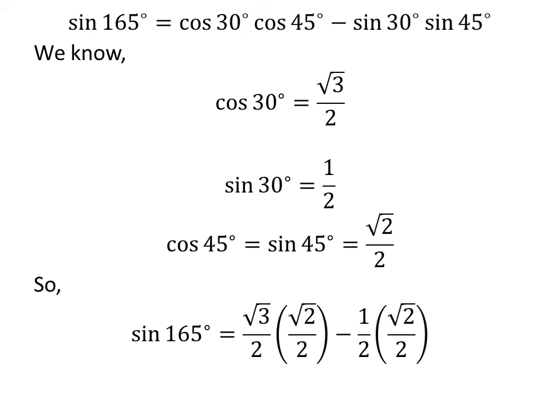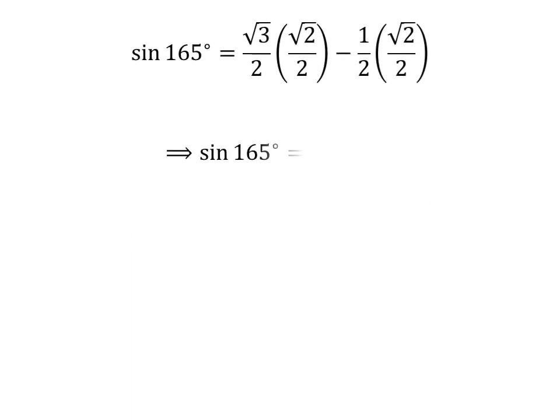Applying the values, we get square root of 3 upon 2 times square root of 2 upon 2 minus one half times square root of 2 upon 2. This multiplication gives us sine of 165 degrees is equal to square root of 6 upon 4 minus square root of 2 upon 4.